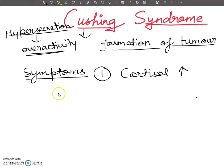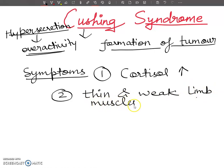Cortisol hormones will be over-secreted. The second symptom is thin and weak limb muscles. Third point is abnormal obesity.